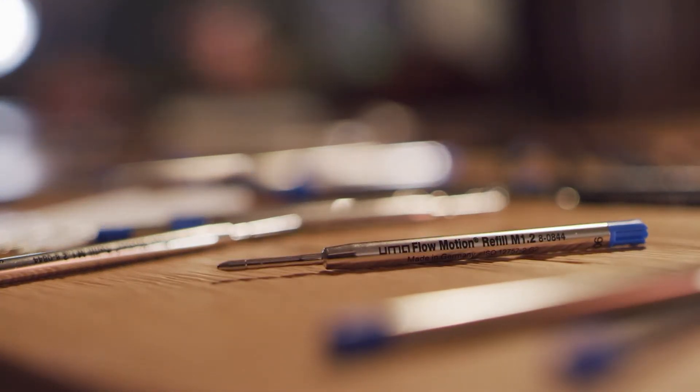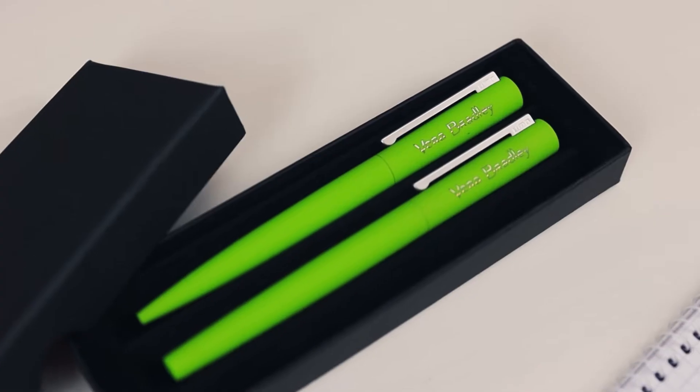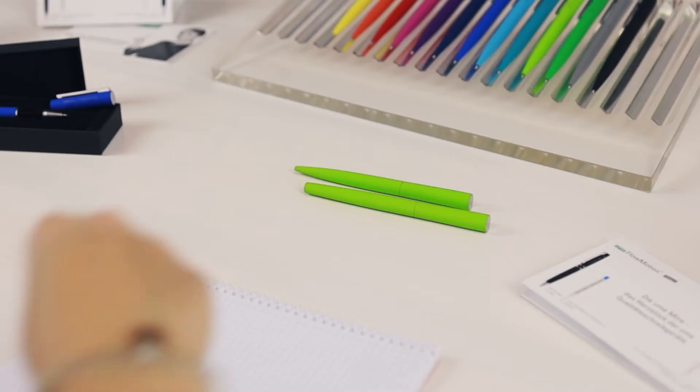The set includes the uma FlowMotion cartridge, specially developed by uma for easy flow writing. With its soft touch surface and optimum weight, it feels good in the hand.